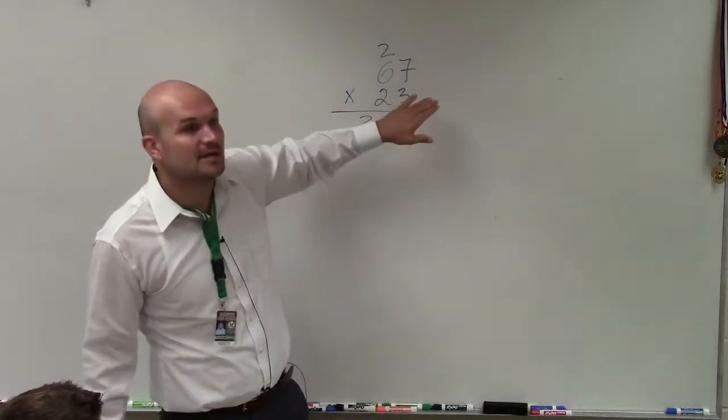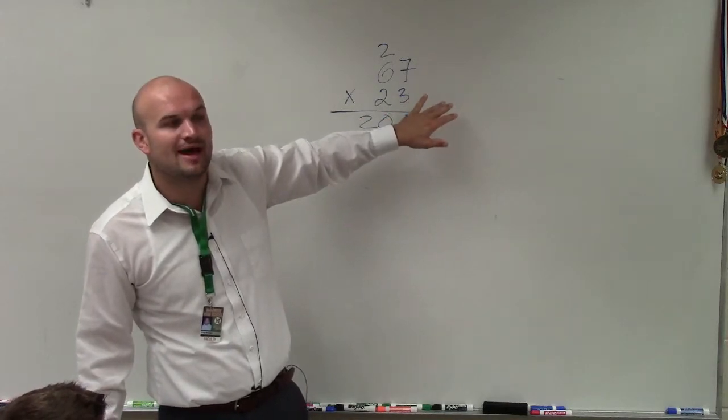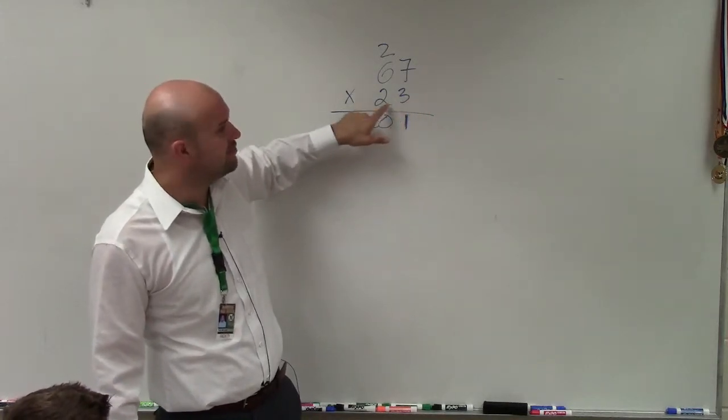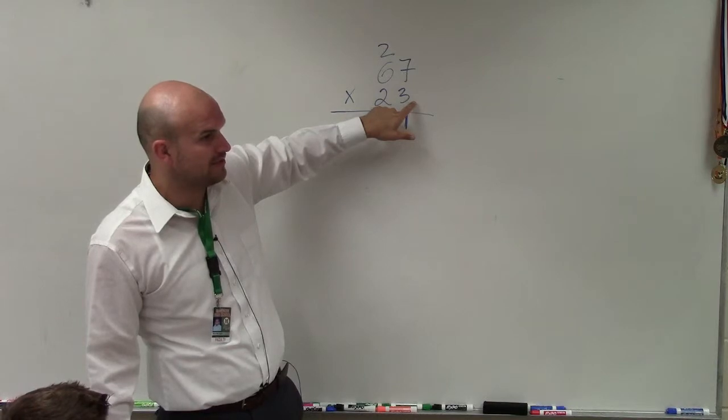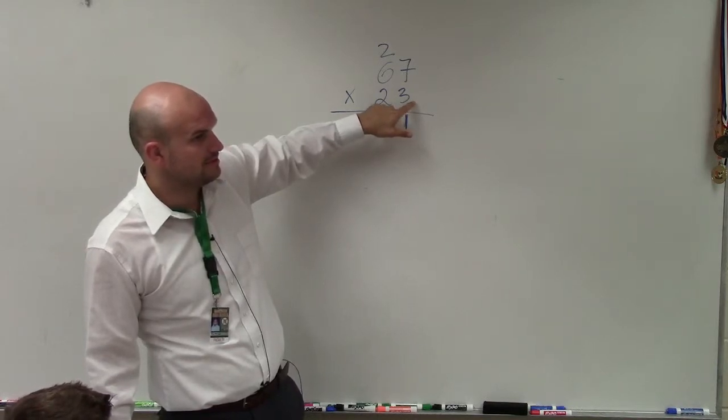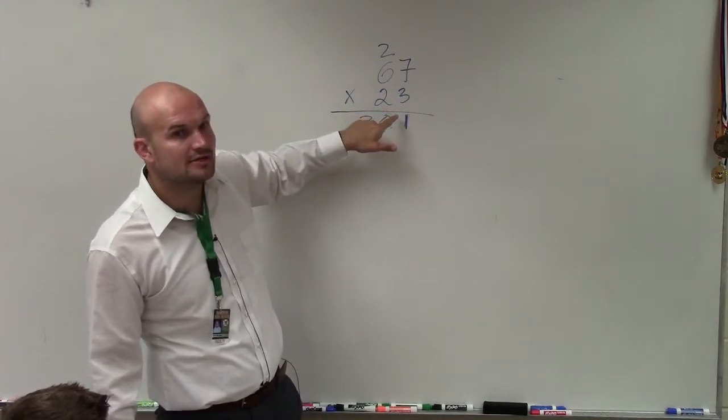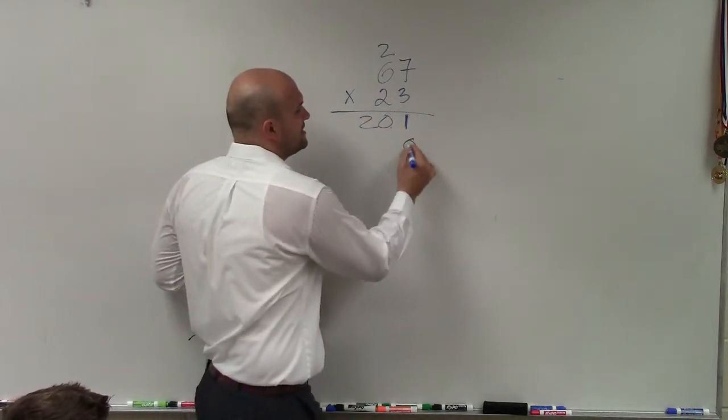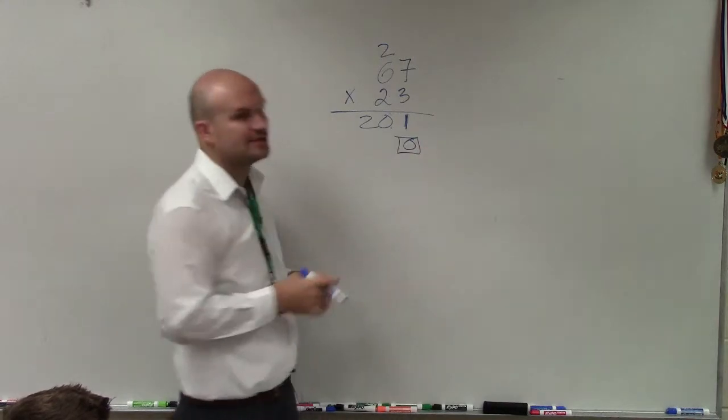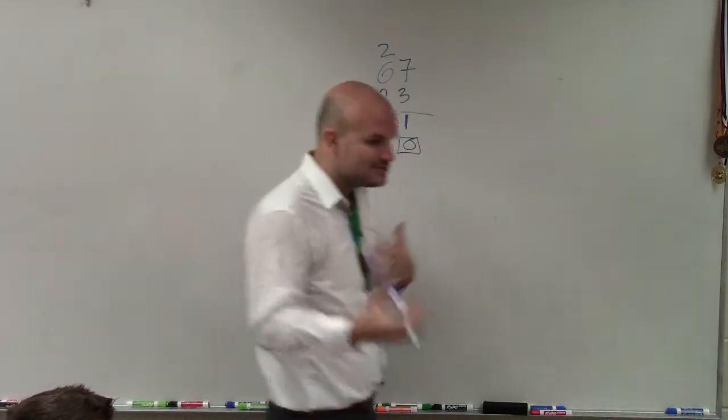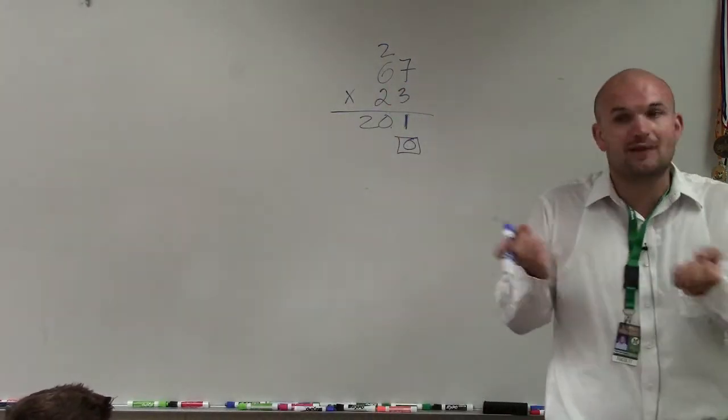So now, the important thing that you guys need to make sure you have is now when we move over, so we multiplied everything with 3. Now we're going to multiply the 2. But before we go ahead and do the multiplication with 2, we need to have this placement. And I like to write a 0 and put a square around it.